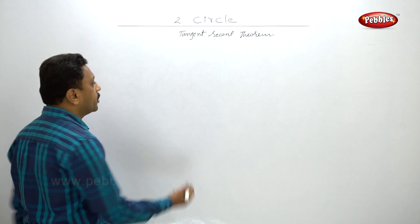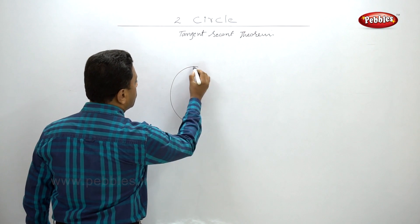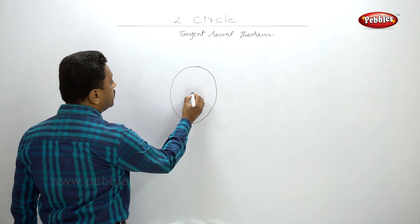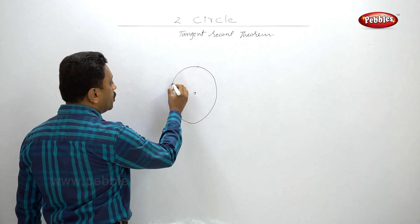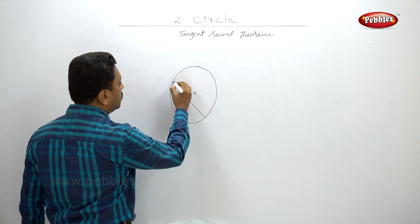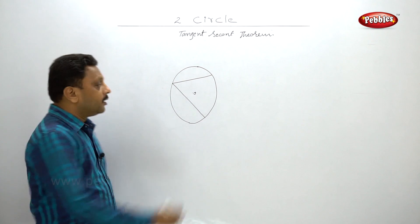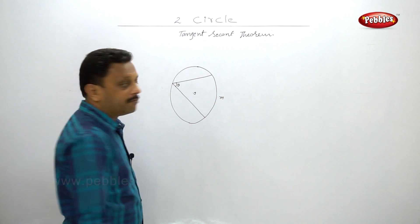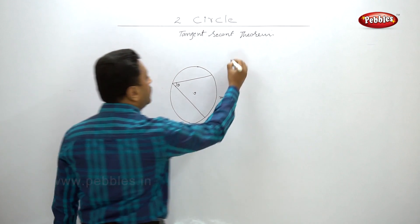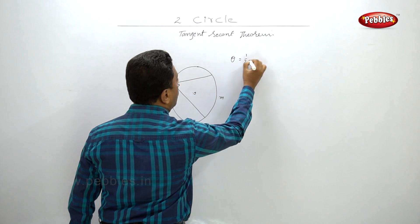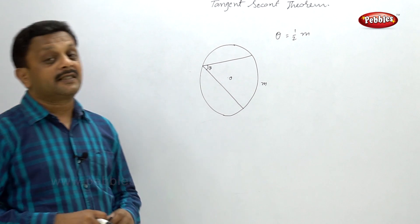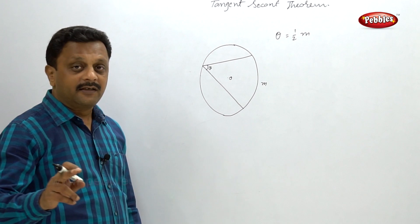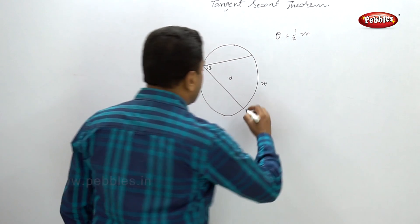Suppose this is a circle with center O. You know that this angle theta, and suppose this is major arc M — we know that theta is equal to half of M. We already learned this from the inscribed angle theorem.